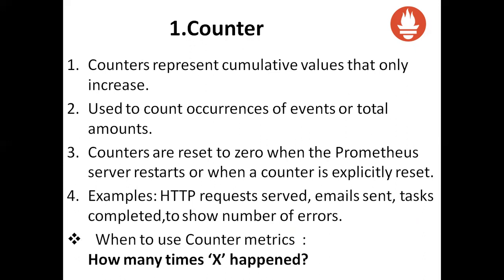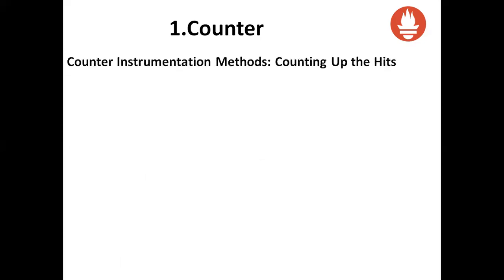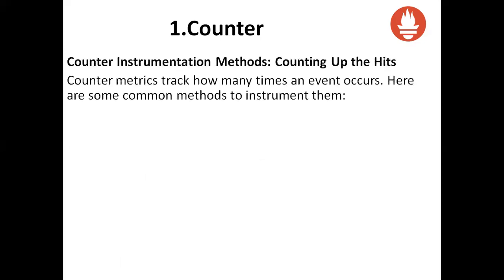When to use counter metrics: if you want to count how many times X happens, you use the counter metric. The counter instrumentation methods track deltas — how many times an event occurs. Here are some common methods to instrument them.